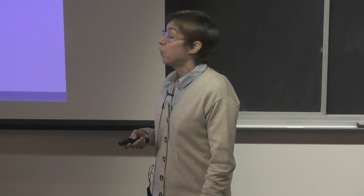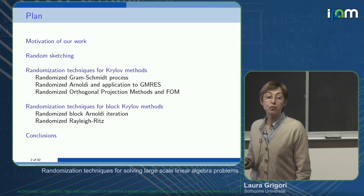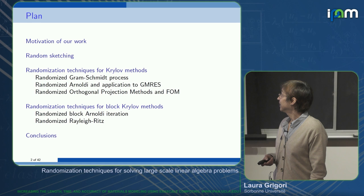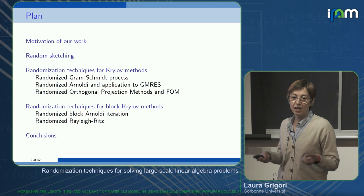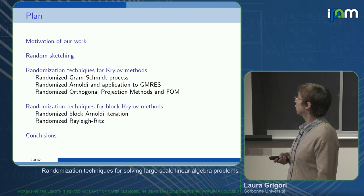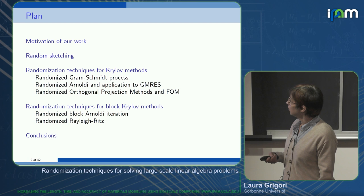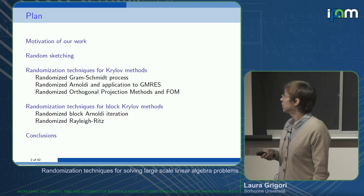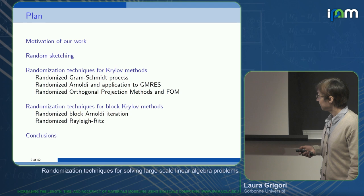I will start with the motivation of our work, then briefly introduce random sketching, and then focus on how to use this in Krylov subspace methods to solve linear systems of equations or eigenvalue problems. First I will discuss how we use this to orthogonalize a set of vectors — a key bottleneck for large-scale solvers — and then we'll see how this is used in Arnoldi, GMRES, full orthogonalization method, block Krylov methods, and eigenvalue problems.